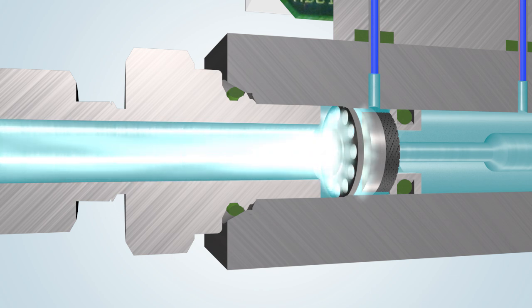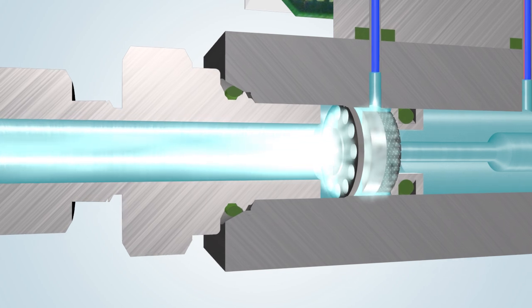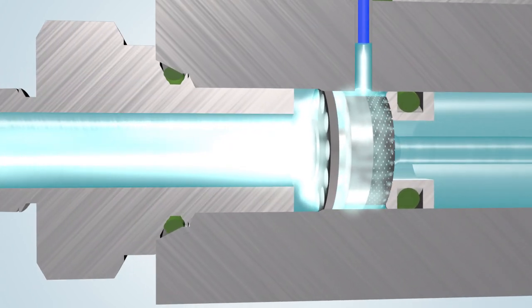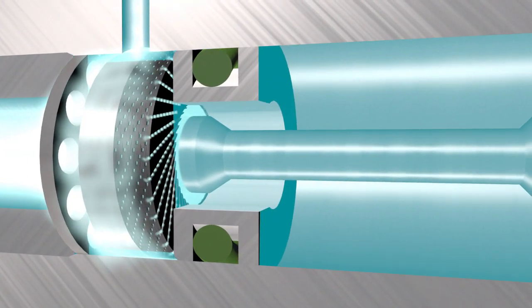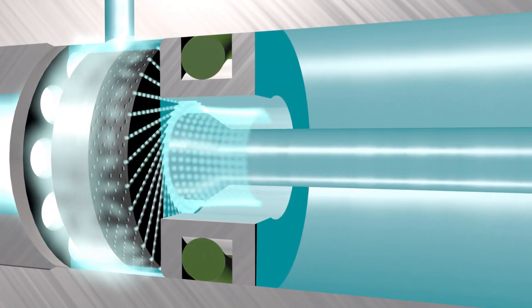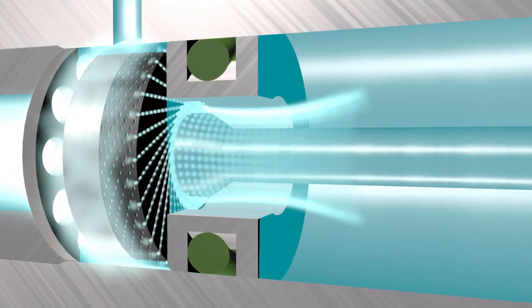The gas flows through the laminar flow element, which serves as a perfectly predictable flow resistance. This makes it possible to build and calibrate an instrument for use on nitrogen and to model it for any other gas.